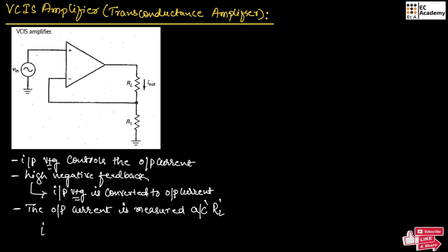The expression for output current can be written as Iout equals Vin divided by R1 plus (R1 plus RL) divided by Avol, which is the open loop gain.